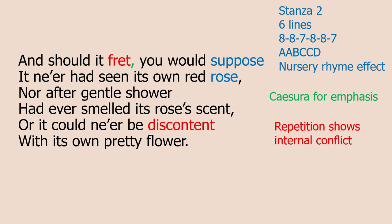So in stanza one, the end stopping was used for emphasis, whereas in stanza two, if you look at line one, there's a comma after 'fret' in 'and should it fret.' When we have punctuation in the middle of a poetic line, we call that cesura. It has the same effect as end stopping — it's meant to make you focus on the bit of line that comes before the punctuation mark, and in particular the word immediately before that piece of punctuation. So I think Lamb really wants us to focus on this idea of fretting, of worrying, and this is a consequence of being envious. So we should avoid that emotion.